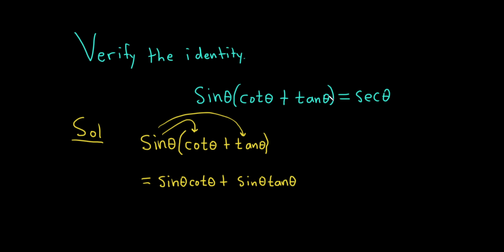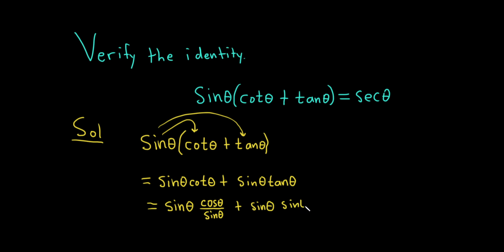And we're trying to get to secant theta. So we're kind of at a sticking point. The only thing we can really do now is write cotangent and tangent in terms of sine and cosine. So this is equal to sine of theta — the cotangent of theta is cosine over sine — and then plus sine of theta, and the tangent of theta is sine over cosine.